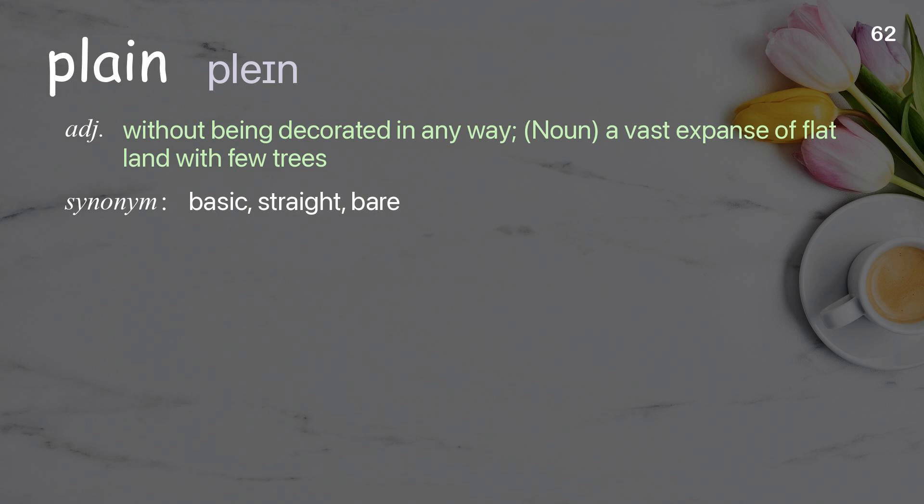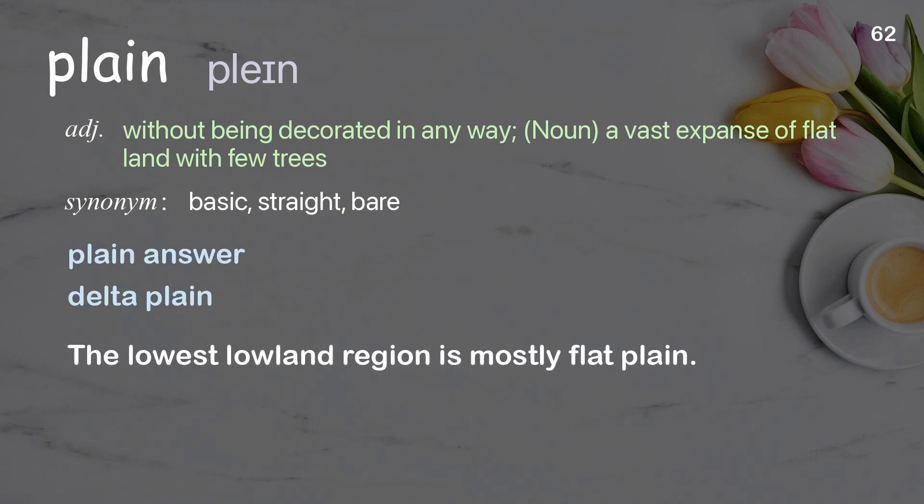Plain: without being decorated in any way; noun: a vast expanse of flat land with few trees. Examples: plain answer, delta plain. The lowest lowland region is mostly flat plain.